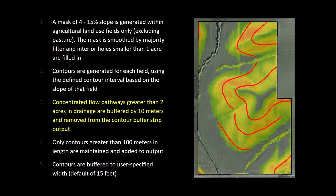Concentrated flow paths greater than 2 acres in drainage area are buffered by 10 meters and removed from the contour buffer strip output, so that the contour buffer strips do not intercept flow paths that would hold too much flow for the strip to intercept. Only contours greater than 100 meters in length are maintained and then added to the output.